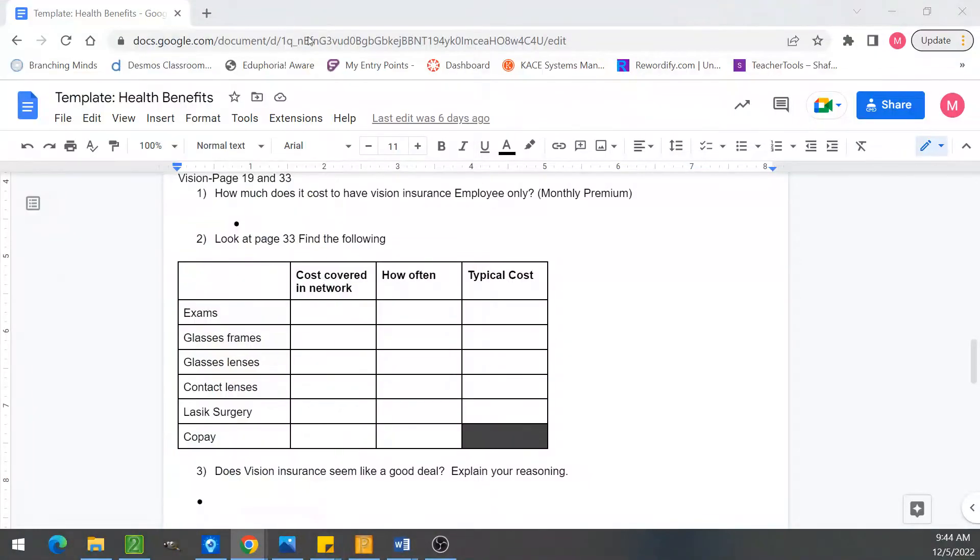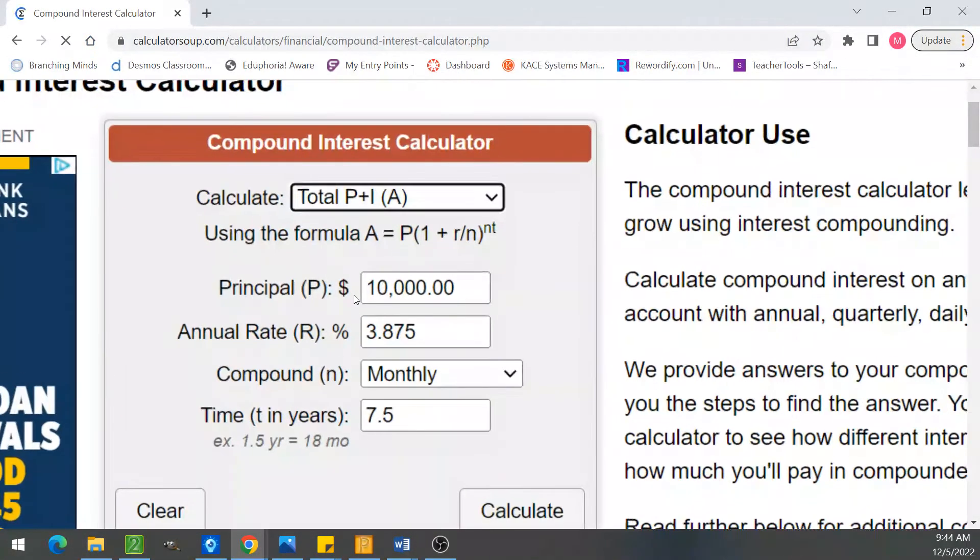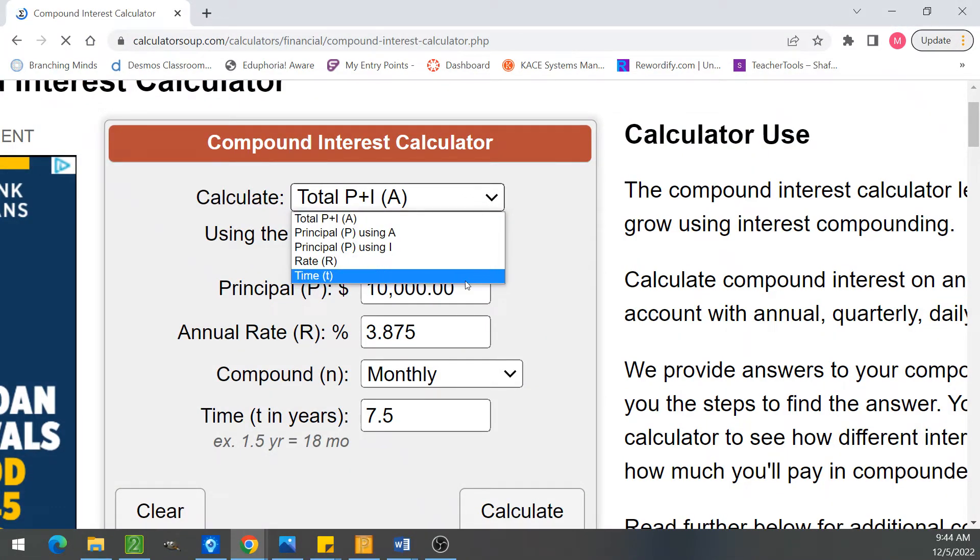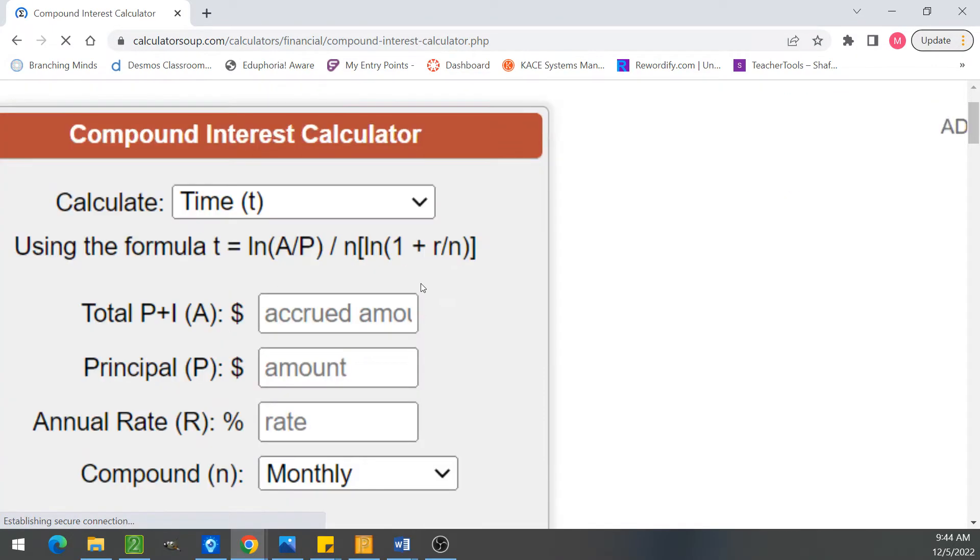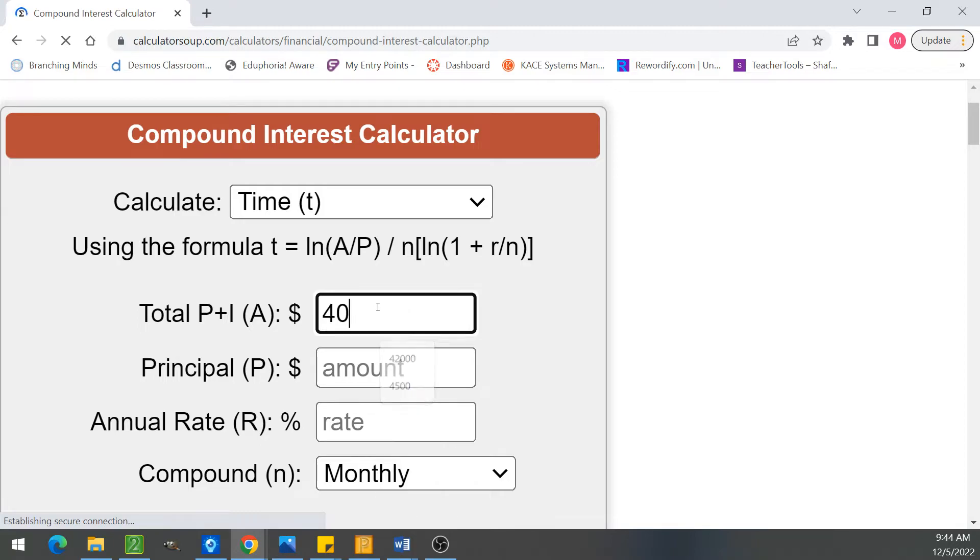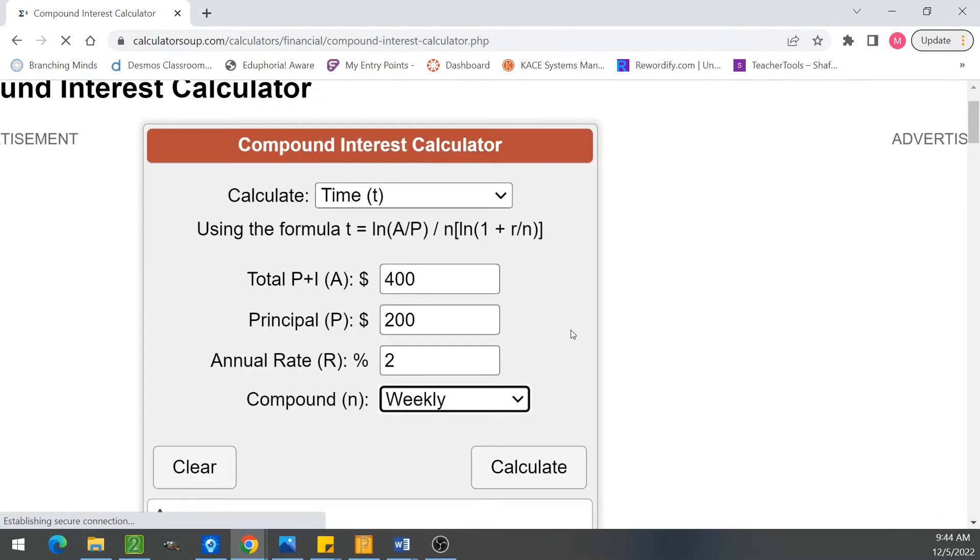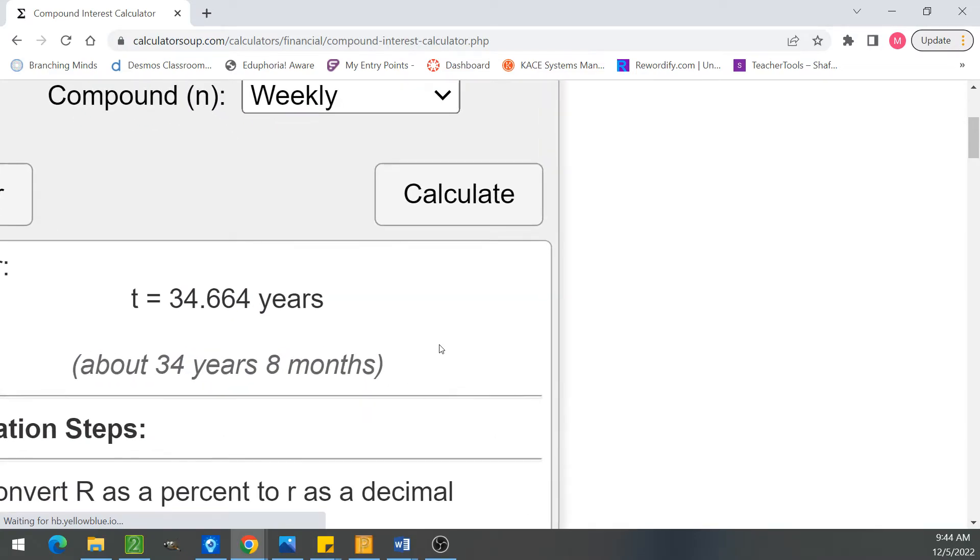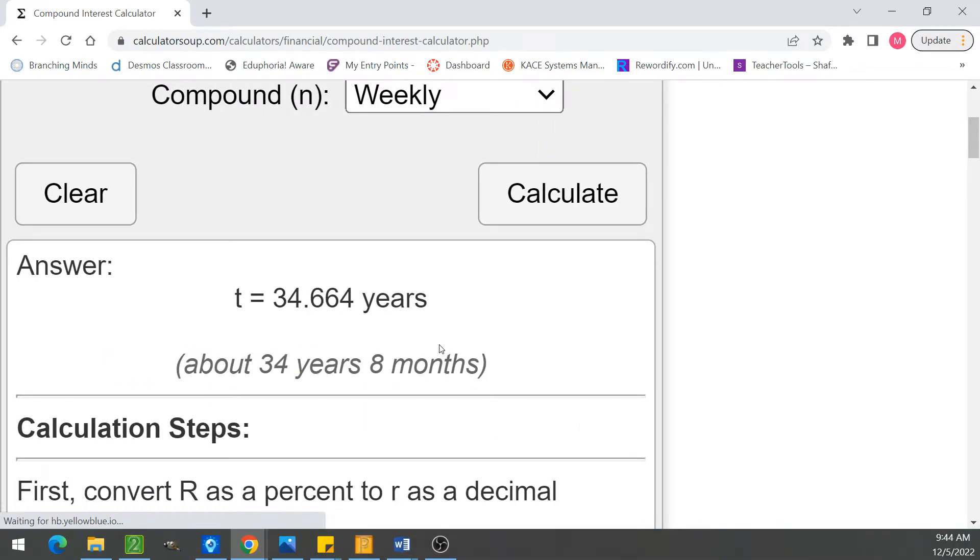Okay, so then I gave you, I'll give you a link to the calculator. What are we looking for guys? We wanted to calculate time. How much should we end up with? How much did we start with? What's our rate? How often is it compounded? Okay, and you're gonna say calculate. Then it's gonna tell you 34 years, 8 months. That's because it's a crappy interest rate. See how it tells you how many months?